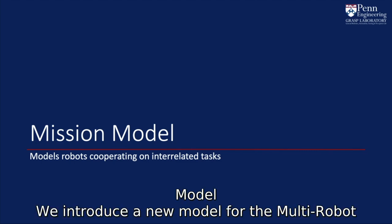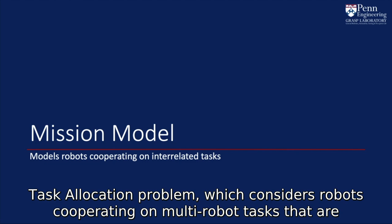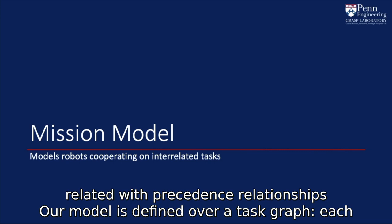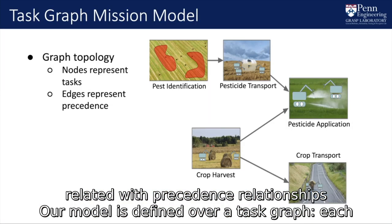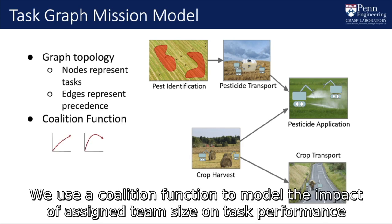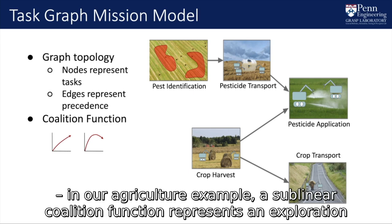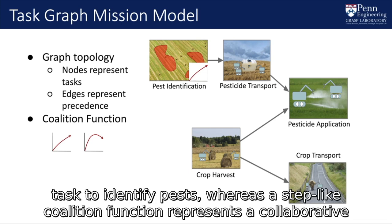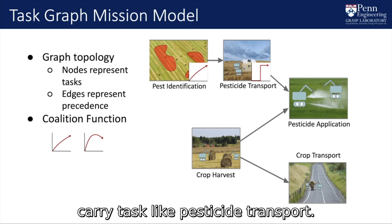We introduce a new model for the multi-robot task allocation problem, which considers robots cooperating on multi-robot tasks that are related with precedence relationships. Our model is defined over a task graph, where each task is a node and each directed edge represents a precedence relationship. We use a coalition function to model the impact of assigned team size on task performance. In our agriculture example, a sublinear coalition function represents an exploration task to identify pests, whereas a step-like coalition function represents a collaborative carry task like pesticide transport.